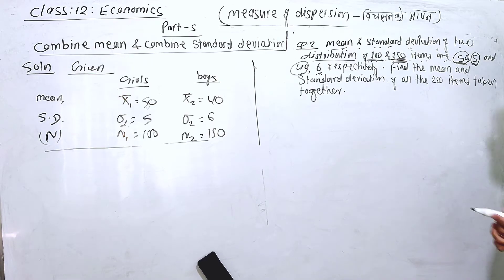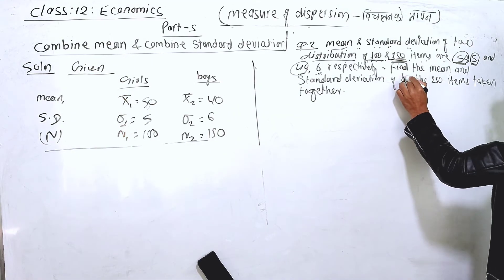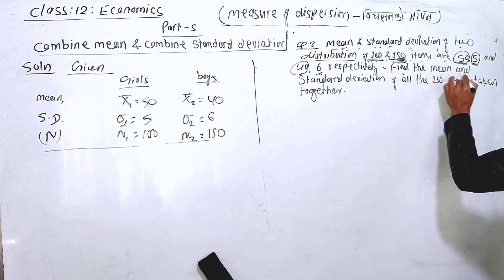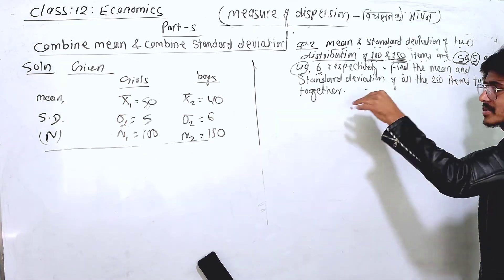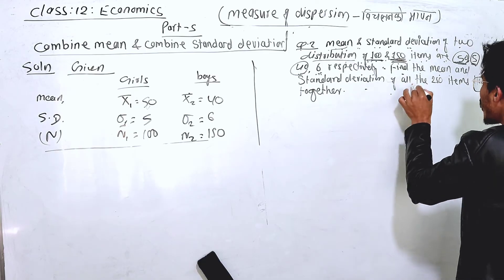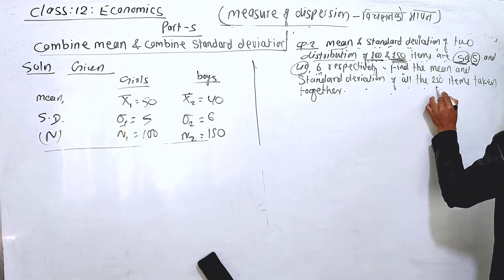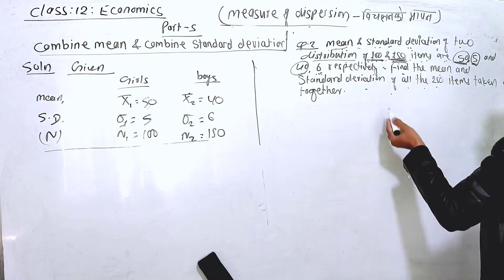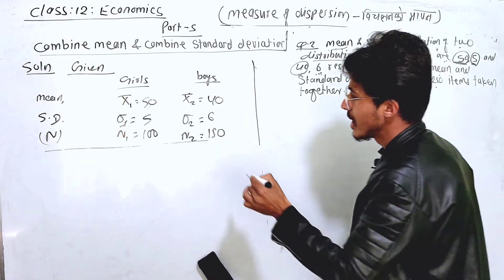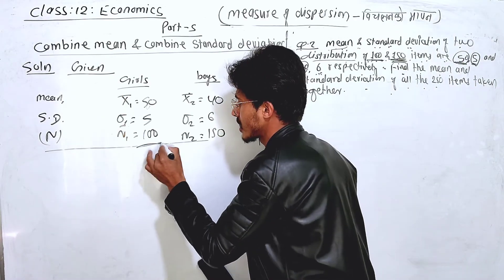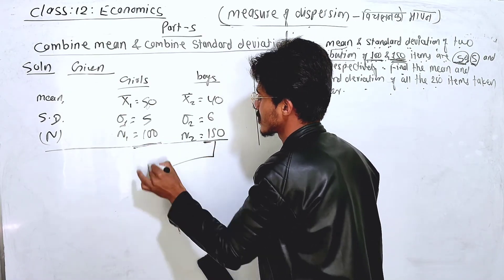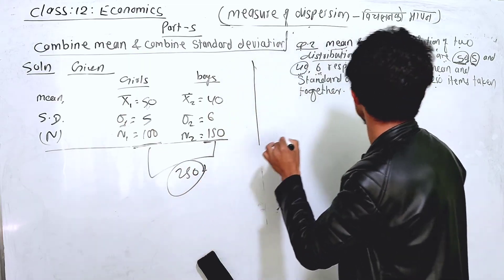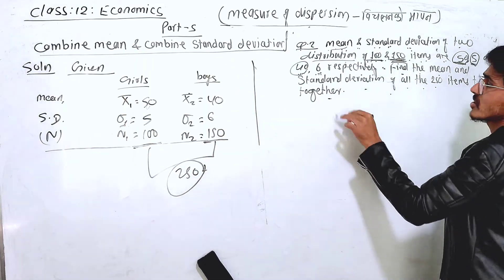We need to find the combined mean and standard deviation of all 250 items taken together. The total is 100 plus 150, which equals 250 items combined.